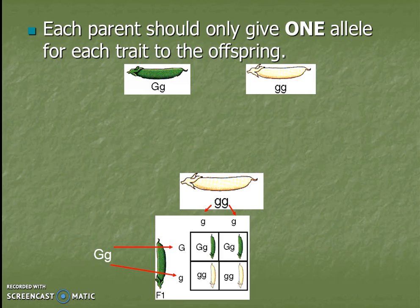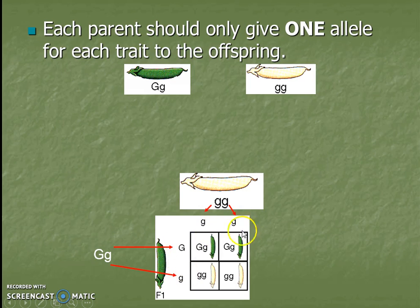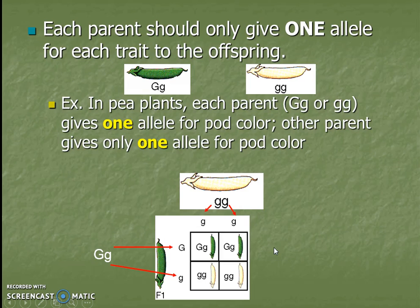That's why on a Punnett square we move the alleles from each parent to be over the different columns or across the different rows — we separate them out that way. That's the law of segregation, summarized.